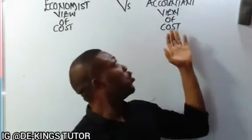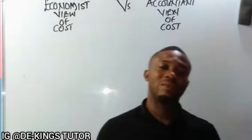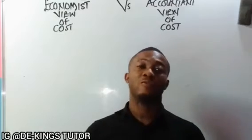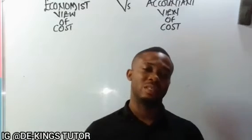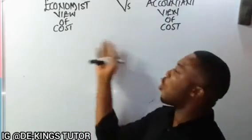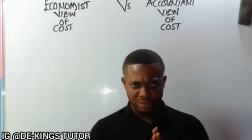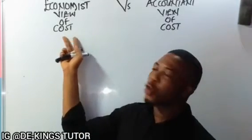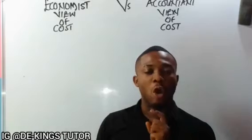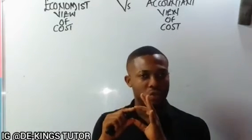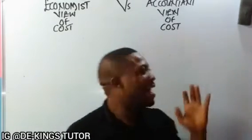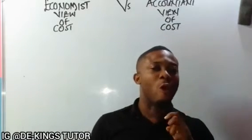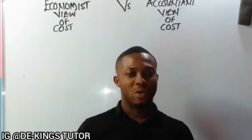And also, who is an accountant? An accountant is a person that has undergone the profession of accounting. Now, they view cost in different dimensions. The economist views cost in terms of what we call the opportunity cost, while the accountant views cost in terms of what we call money cost.